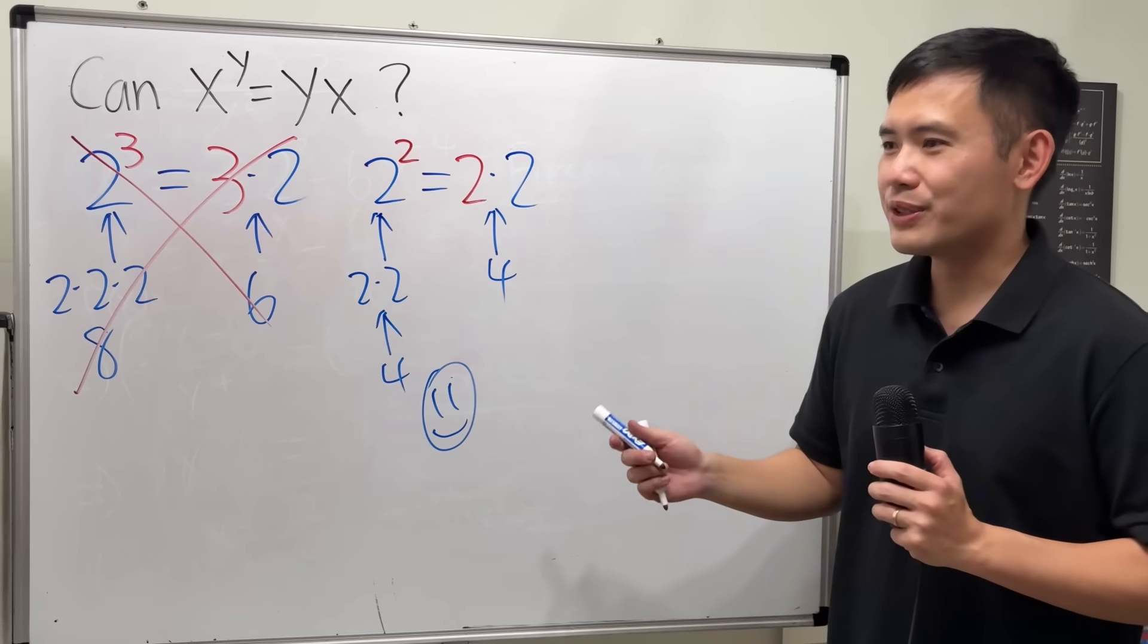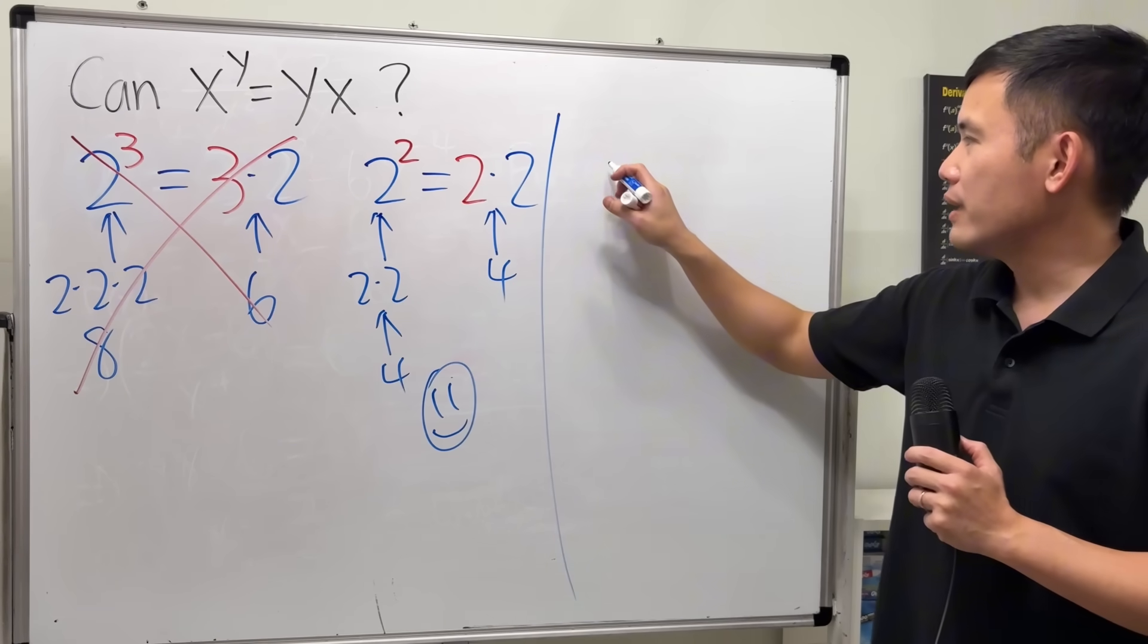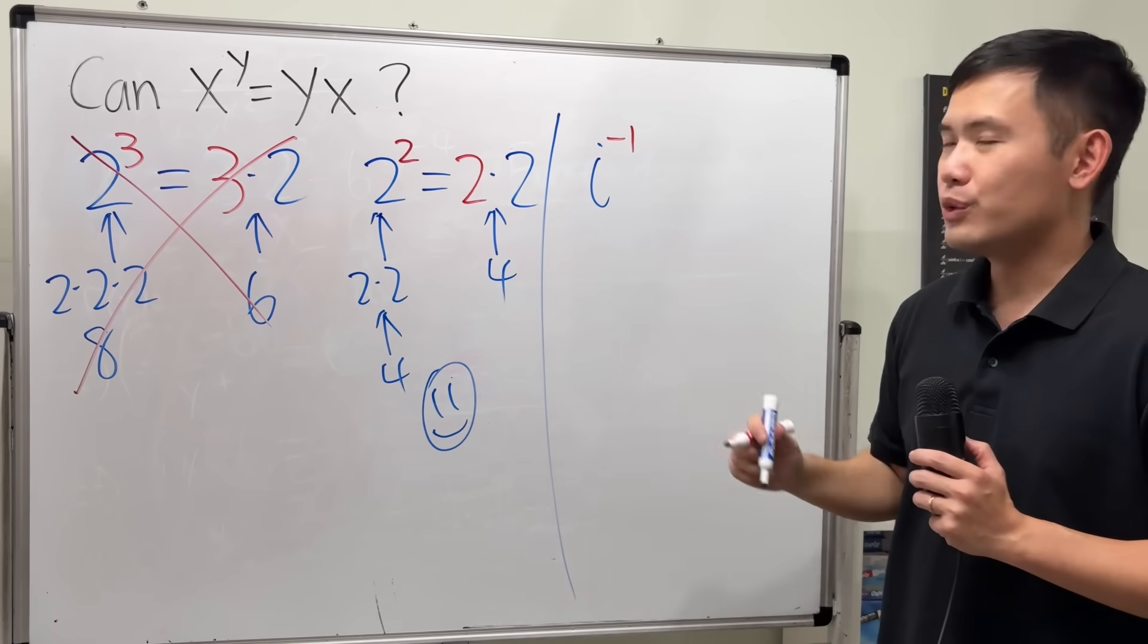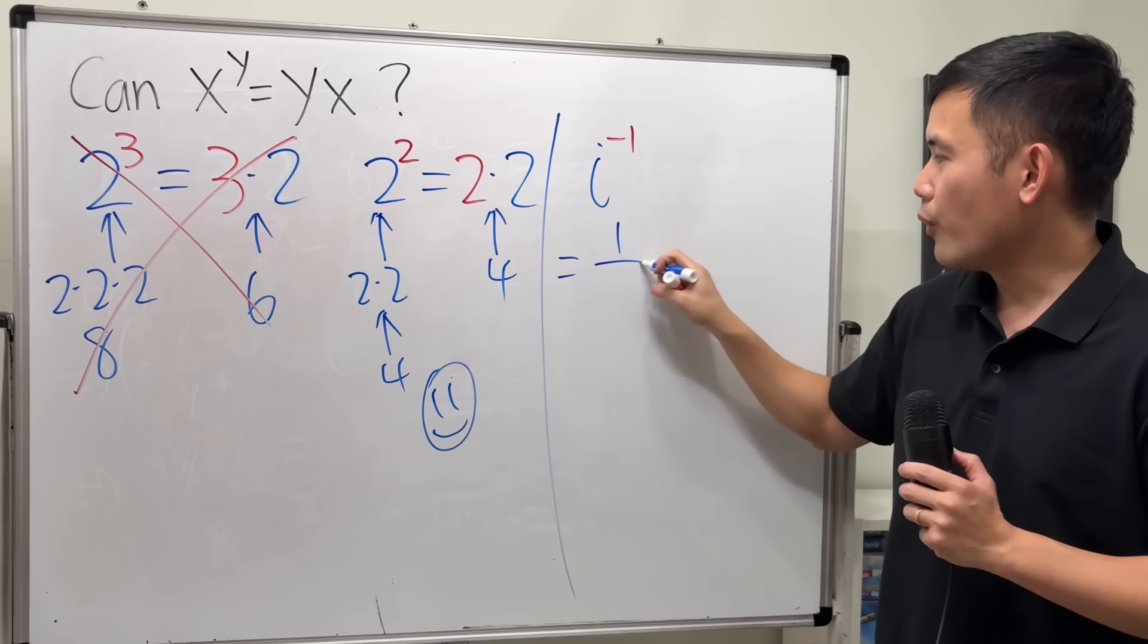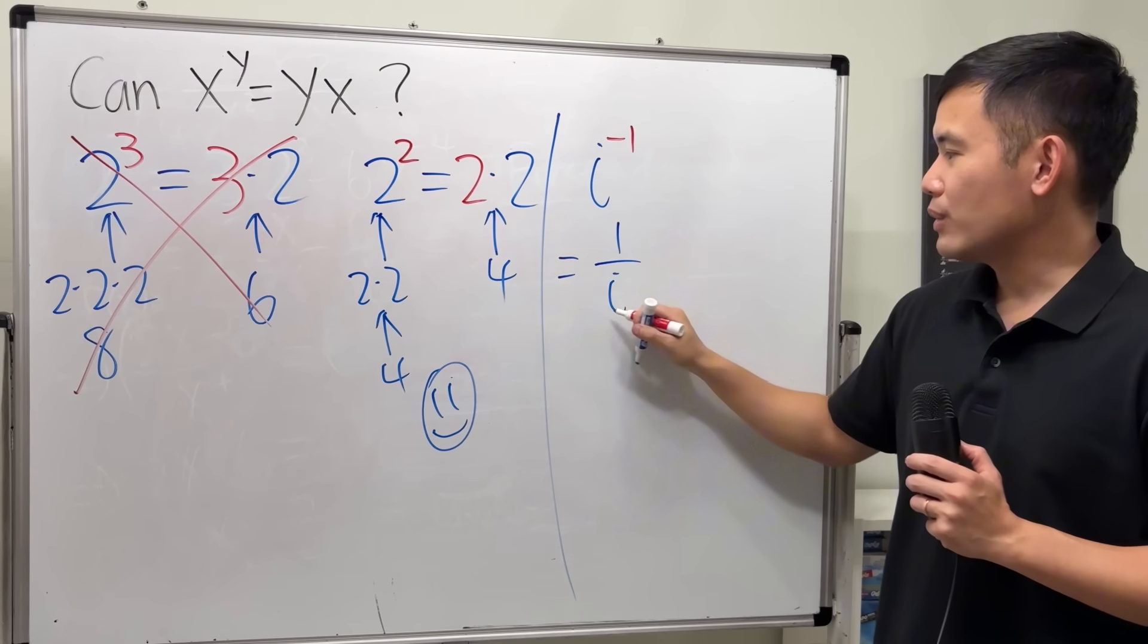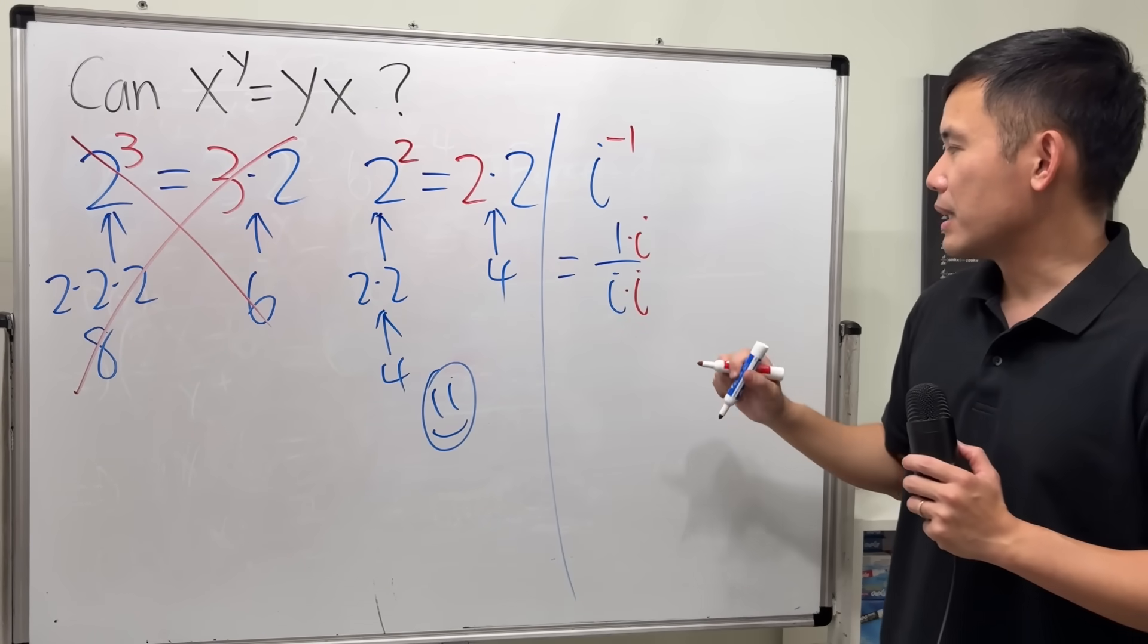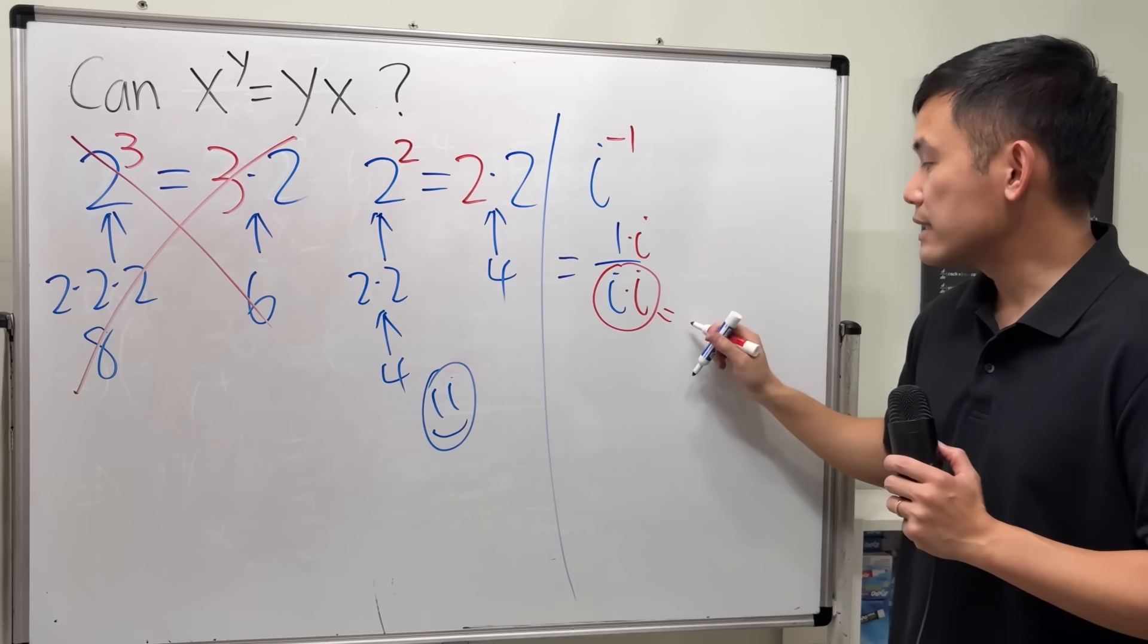But in fact, the inspiration for this question is actually the following. Check this out. I was doing this question: i to the negative 1 power. Well, how do we usually simplify this? In fact, you write this as 1 over i because of the negative exponent. And we don't like to have the i on the bottom. Let me just multiply i on the bottom, also on the top. On the bottom, i times i gives us i squared,